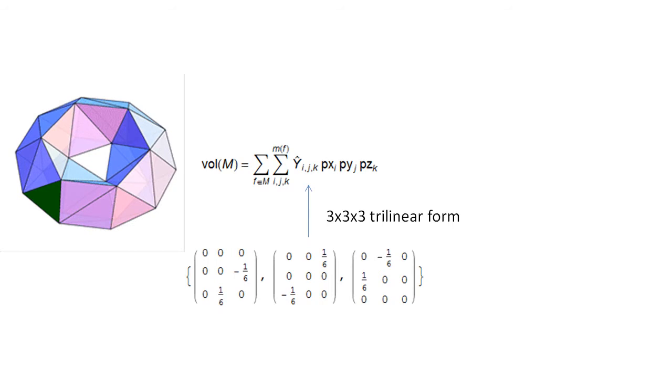We generalize this a bit further. The determinant is equivalent to a 3x3x3 trilinear form. The x, y, z coordinates of the points are arranged in vectors that become the input to the trilinear form. These are the 27 coefficients of the trilinear form.